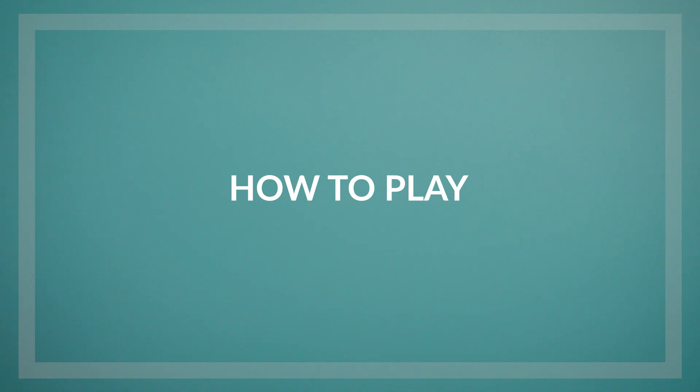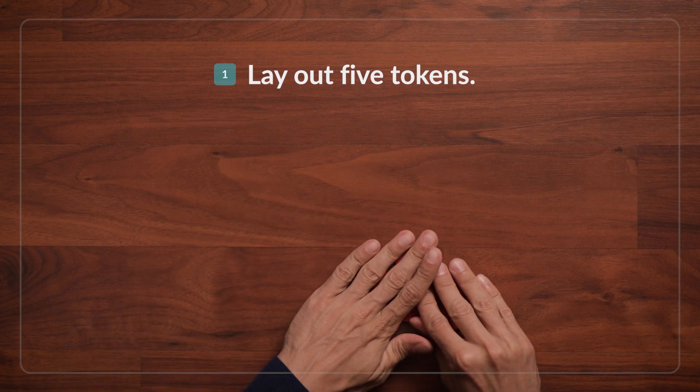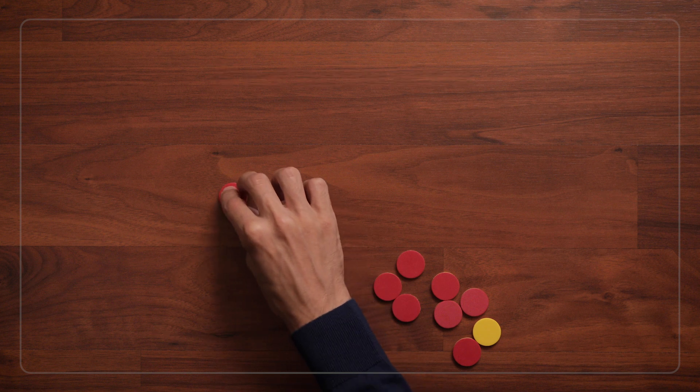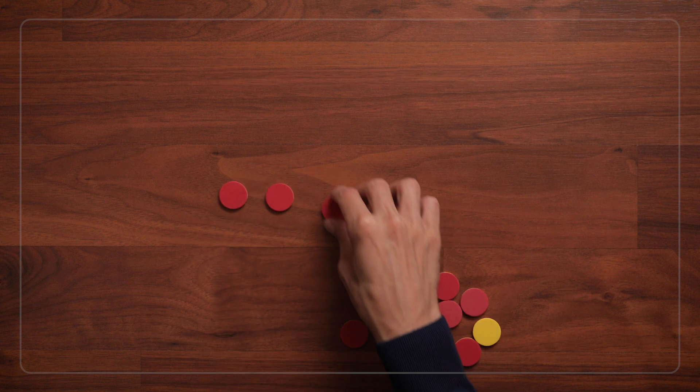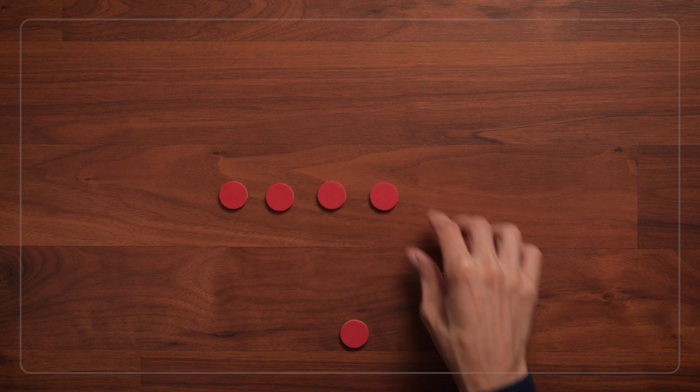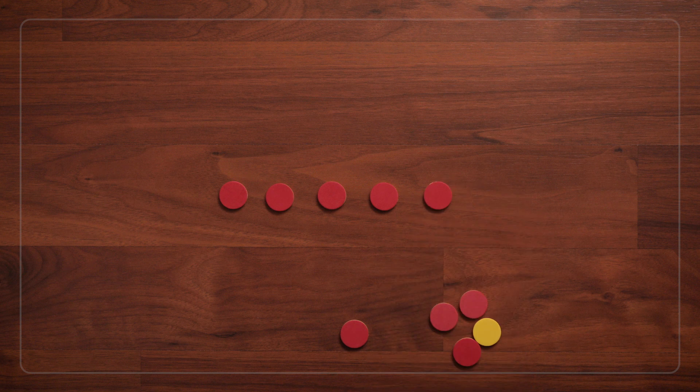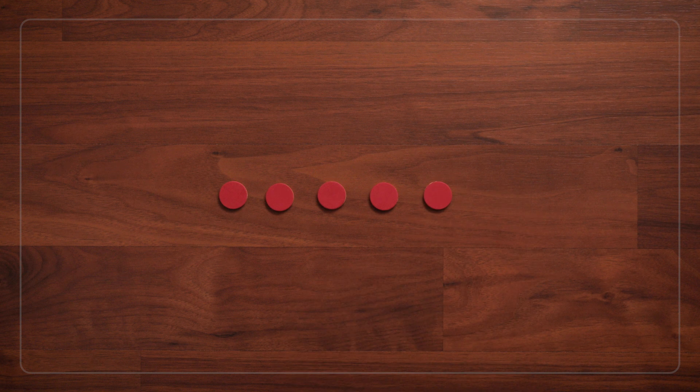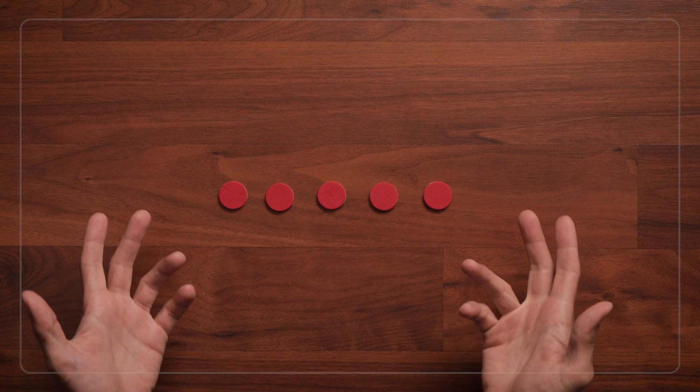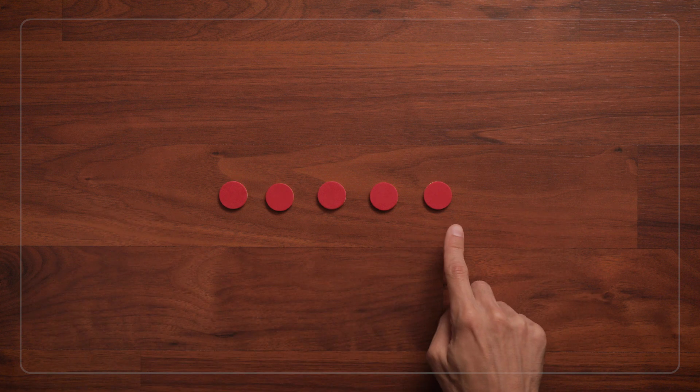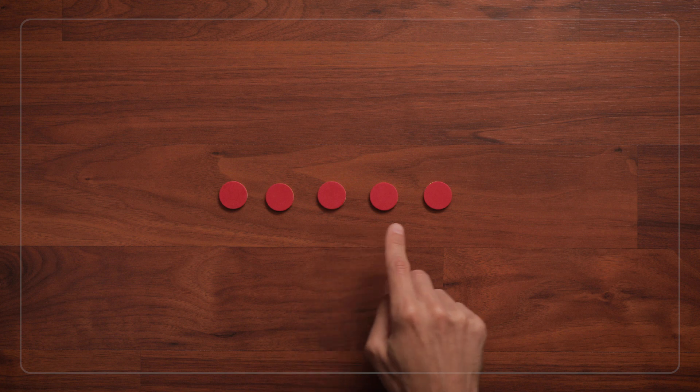So first we're going to ask the children to put five tokens out on the table. One, two, three, four, five. And you can see if they know when to stop. Once you have five tokens, you can ask, 'So how many do we have again?' And see if they know five immediately, or if they need to count the tokens again.